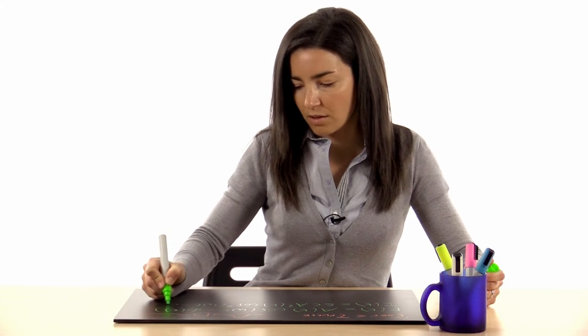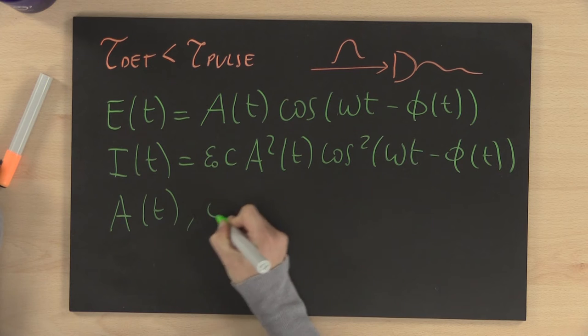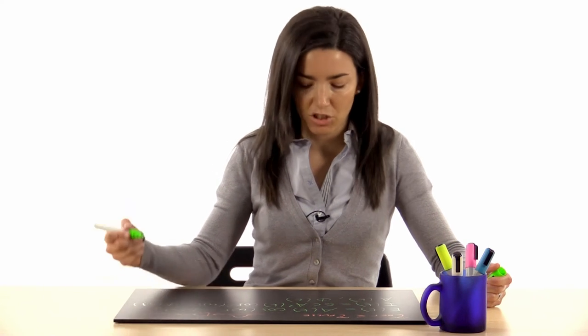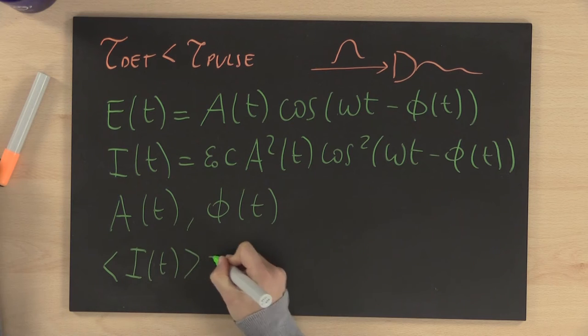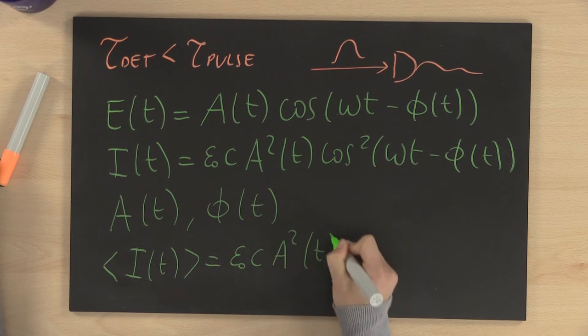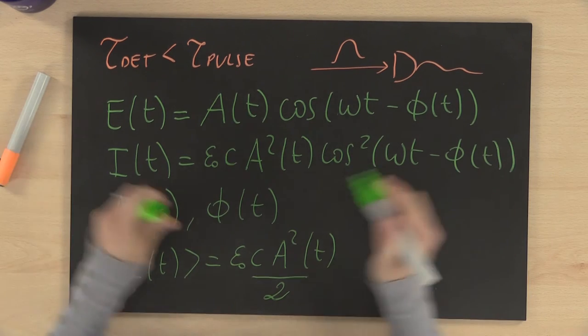The amplitude of the pulse and the phase completely characterize our laser pulse. If the temporal amplitude of our pulse varies slowly, then we can define an average intensity profile, which corresponds to the square of the temporal amplitude of our pulse. Intensity autocorrelation is a technique to measure this average intensity profile of the pulse.